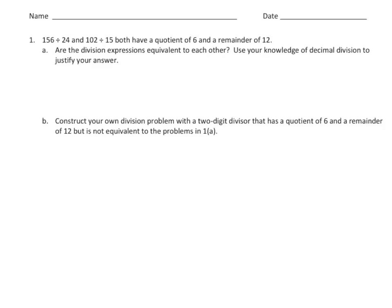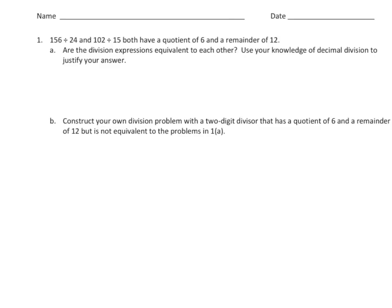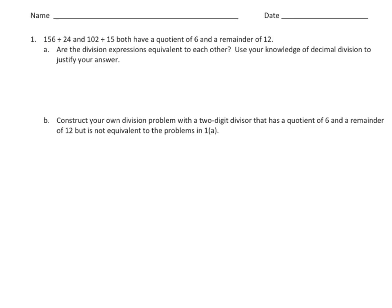This is something similar to what you'll see in your homework. We have 156 divided by 24, and 102 divided by 15. Both have a quotient of 6 with a remainder of 12. Are these division expressions equivalent to each other? Use your knowledge of decimal division to justify your answer.